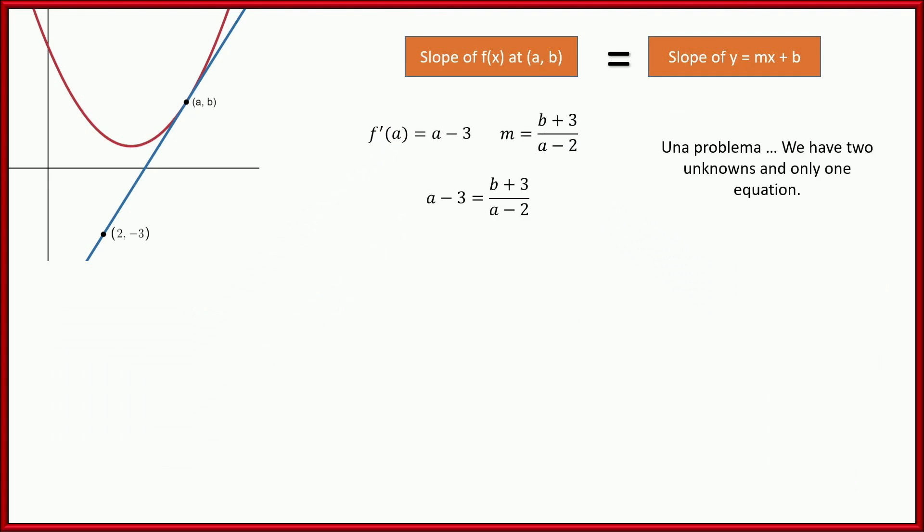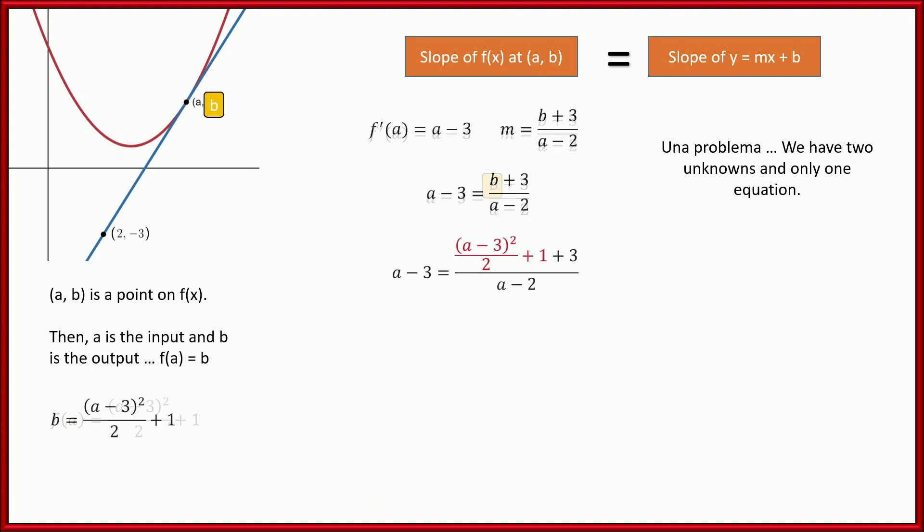All right. Now, we have one major, major problem. We have one equation here and we have two unknowns, a and b. So either we need to come up with another equation that we can solve and substitute, or we need to figure out another way to express b in terms of a. And that's what we're going to do. You see, (a,b), that's an ordered pair on the parabola. That means that a is the input and b is the output. So if we take our original equation, plug a into it, just figure out what is f(a). That's what b is. f(a) is b. That's what this means. a is the input, b is the output.